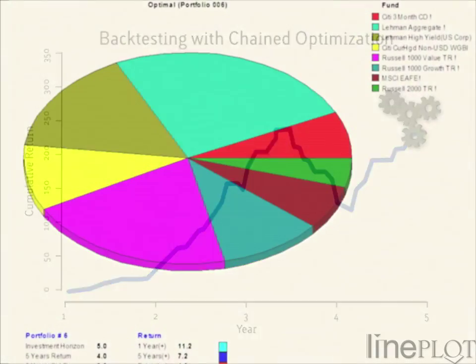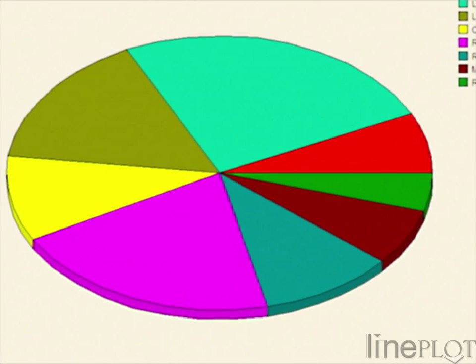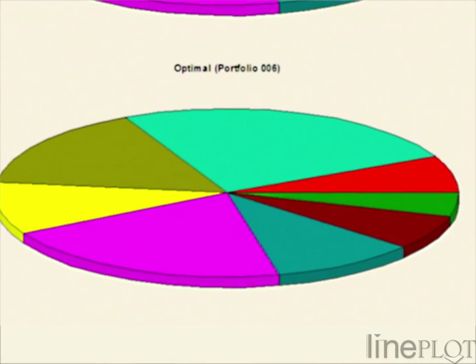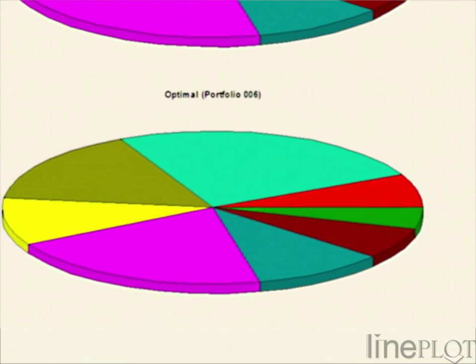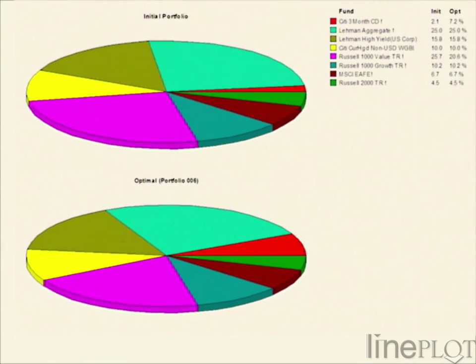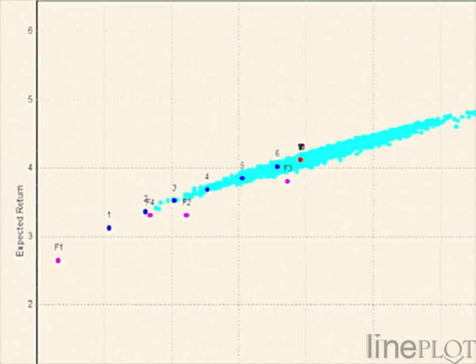The ART optimiser and backtest system generate a wide range of reports and charts. These can all be exported into spreadsheets or presentations for further analysis.